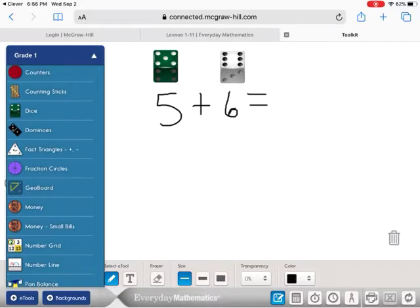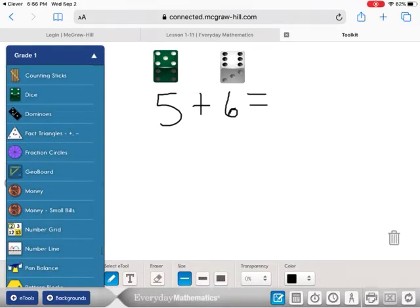You could always bring money over, five pennies plus six pennies. Oh, I also see number line. You could bring a number line over and do your jumps. Five jumps plus six jumps. You have lots of choices, first graders, how you could solve this problem.